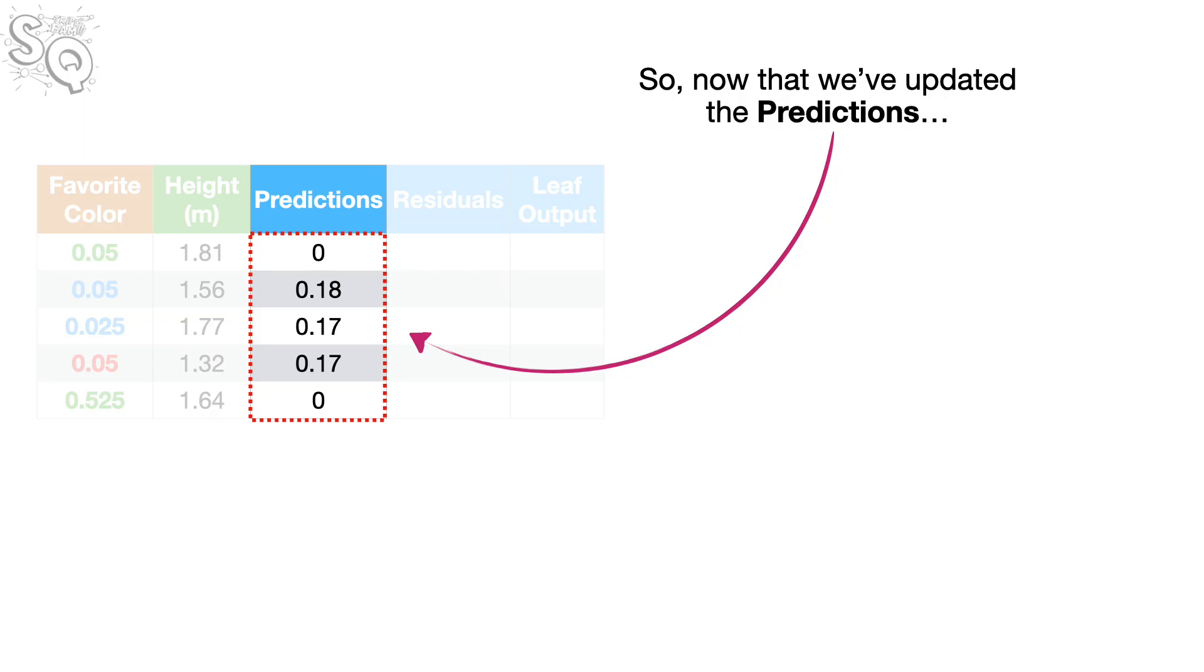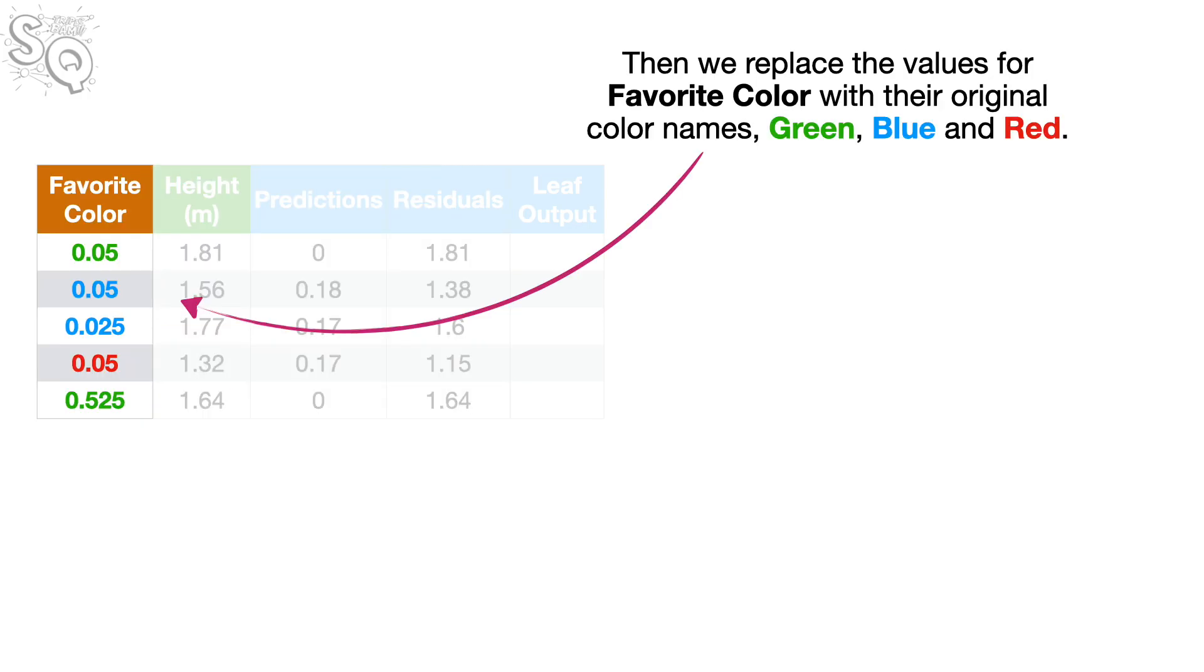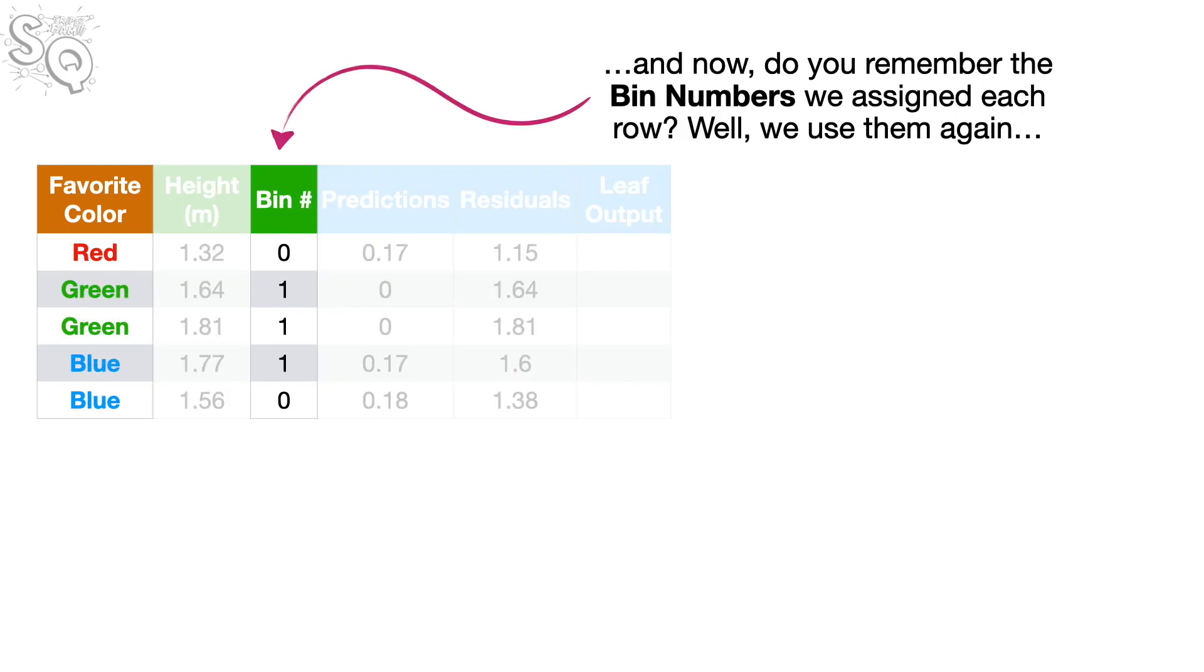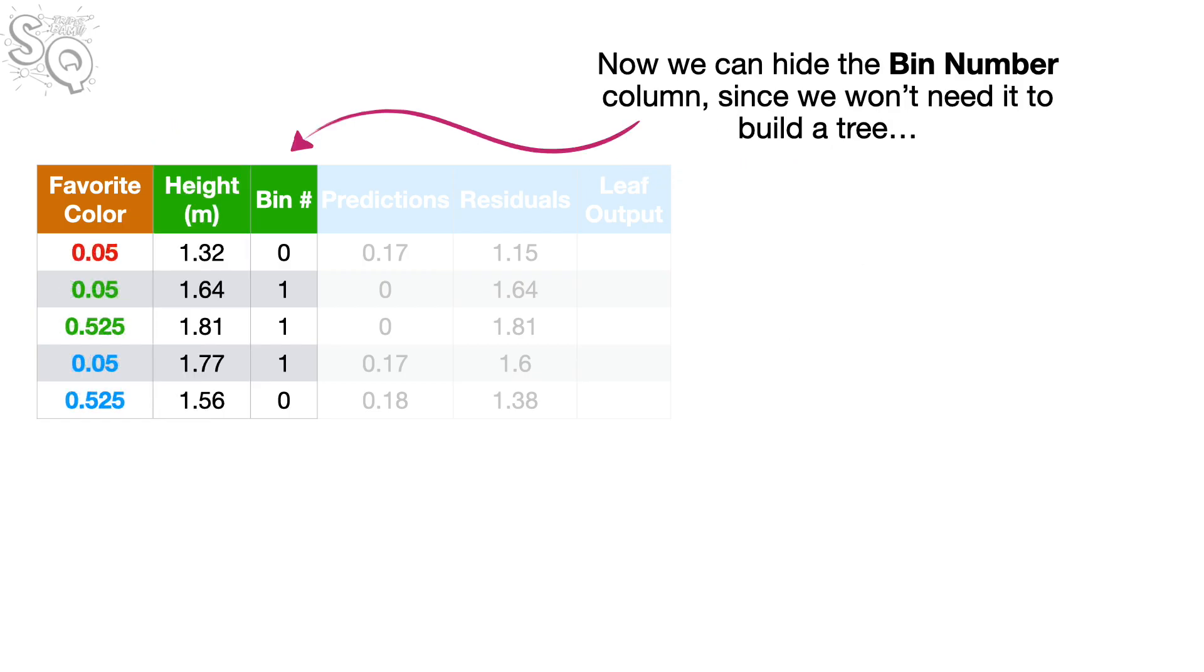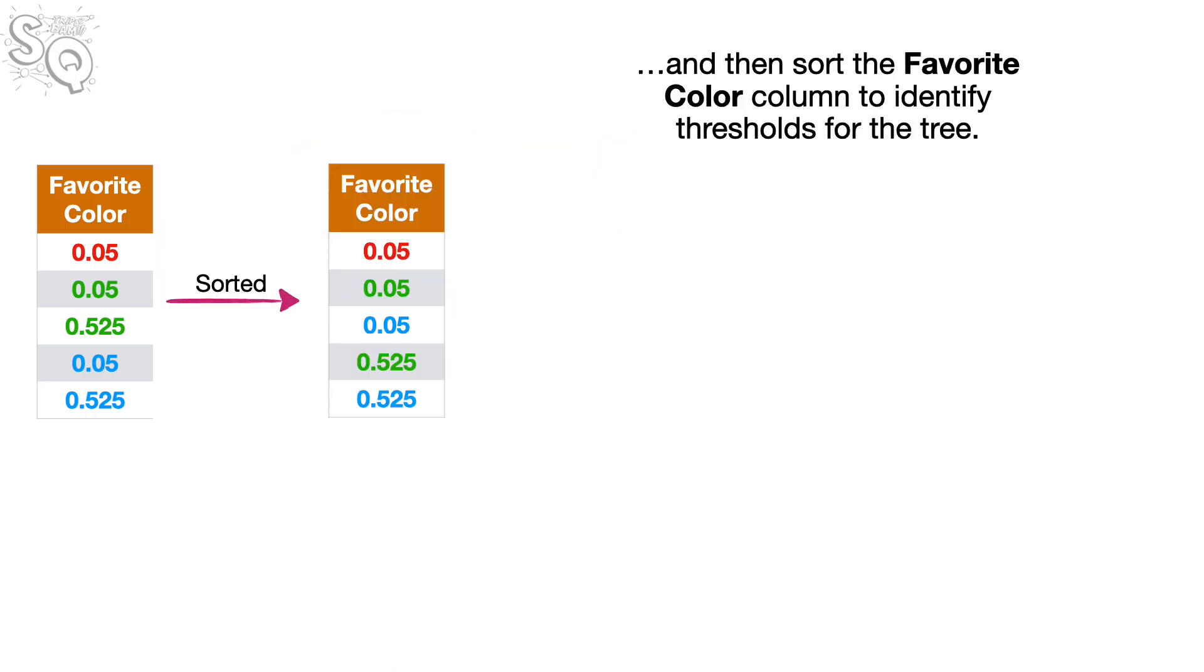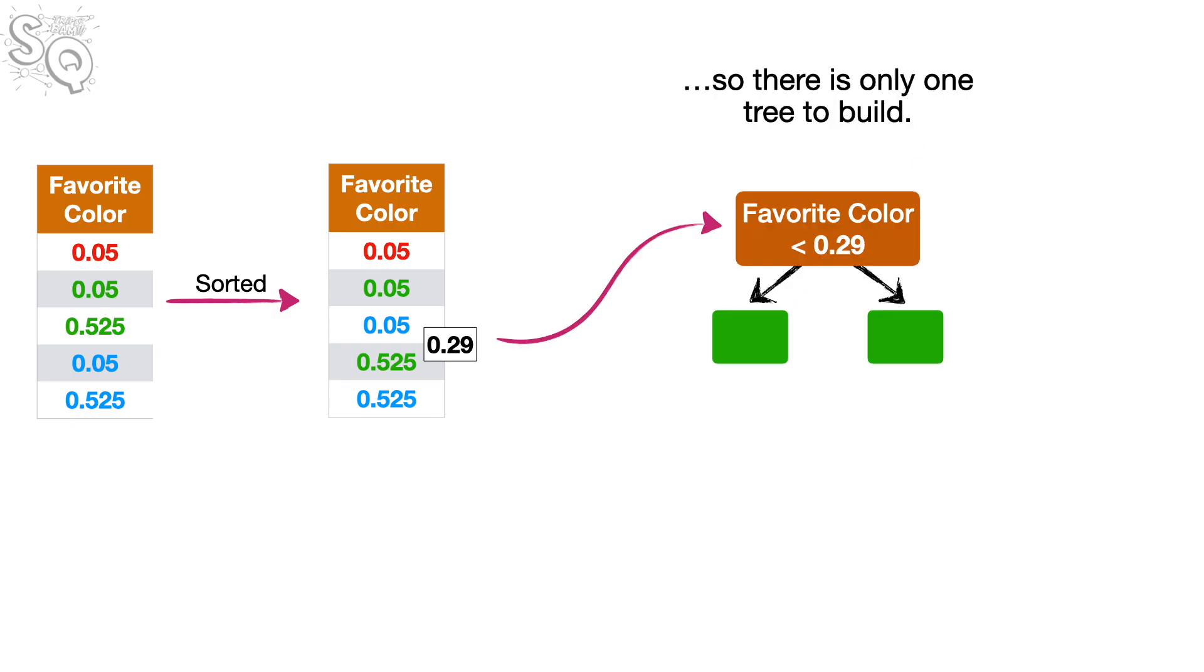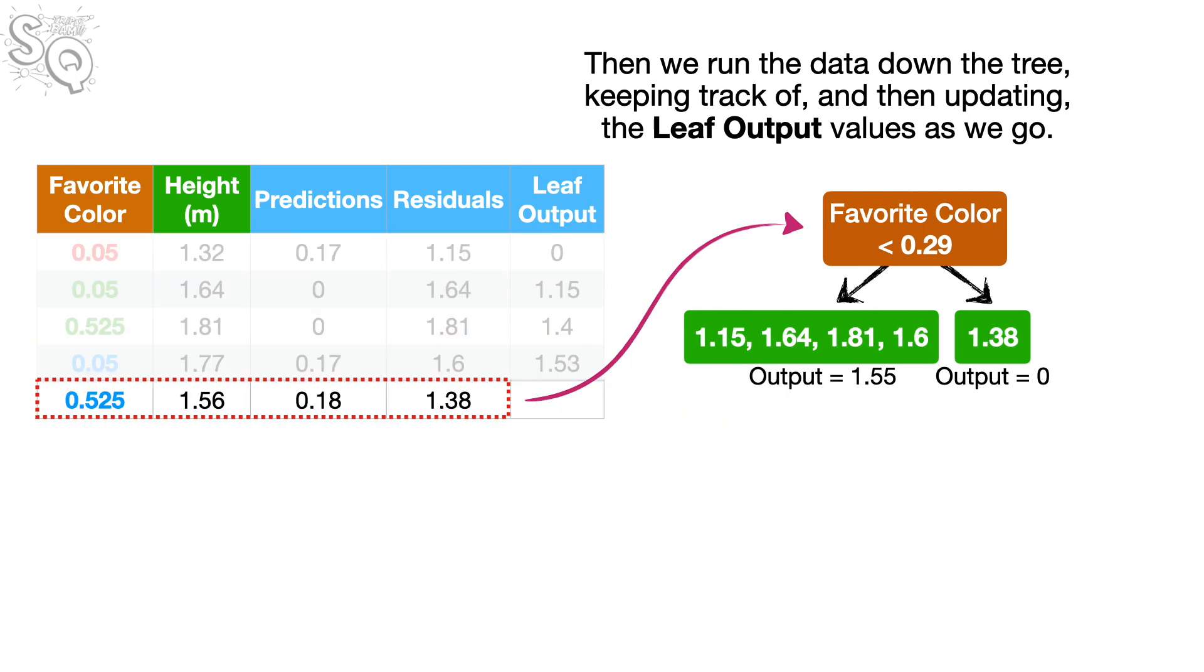So, now that we've updated the predictions, we can update the residuals by subtracting the predicted values from the observed. Then we replace the values for favorite color with their original color names, green, blue, and red. Then, just like we did earlier, we randomize the rows. And now, do you remember the bin numbers we assigned each row? Well, we'll use them again to apply ordered target encoding to favorite color. Now, we can hide the bin number column, since we won't need it to build a tree. And then, sort the favorite color column to identify thresholds for the tree. And, in this case, there's only one threshold, 0.29. So, there's only one tree to build. Then, we run the data down the tree, keeping track of, and then updating, the leaf output values as we go. Bam.